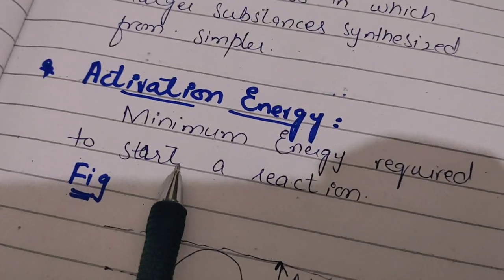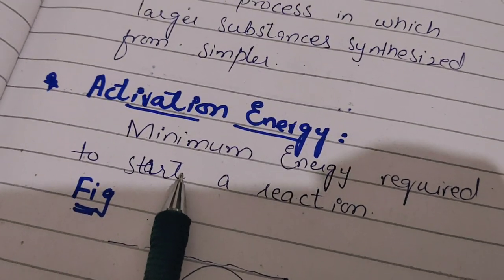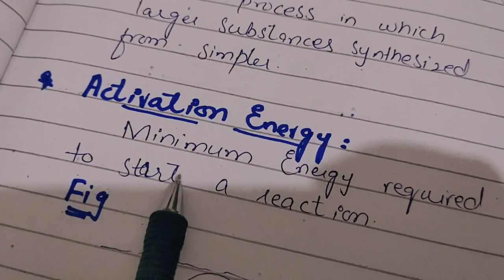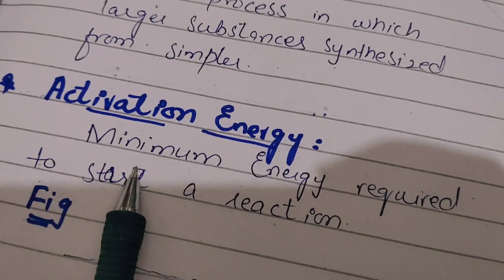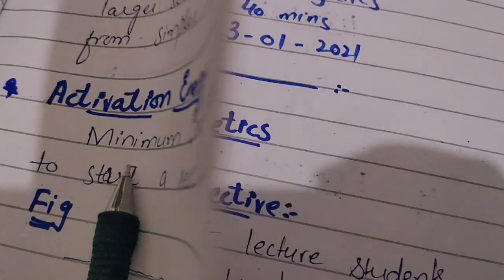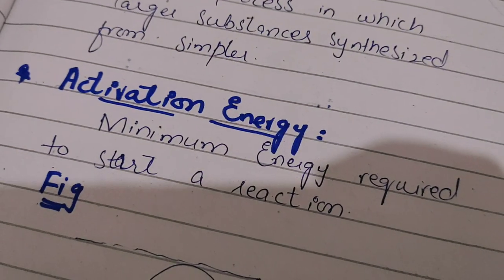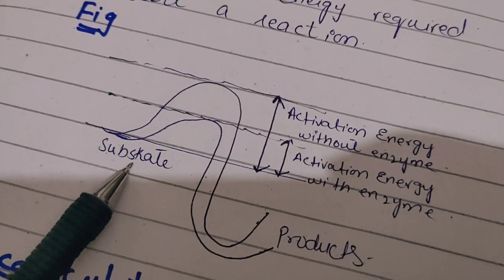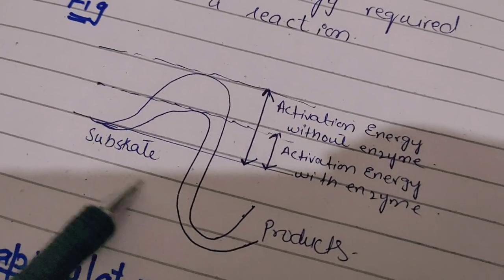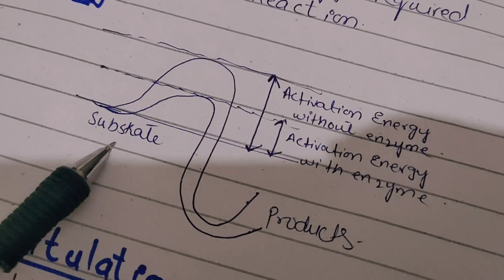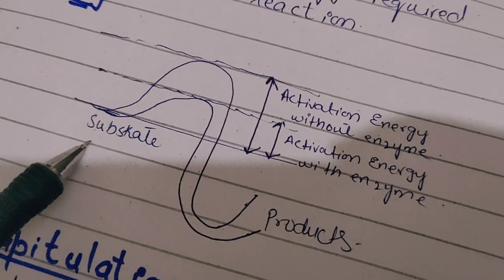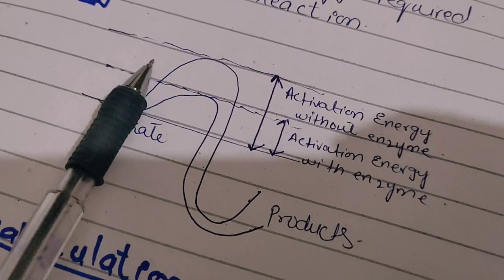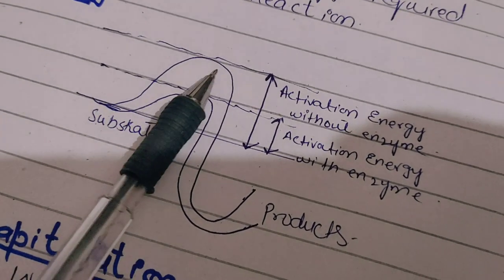Activation energy is the minimum energy required to start a reaction. When a reaction is initiated, it can be enhanced by this minimum energy, which can be provided by the enzyme. Here is a diagram: the substrate — which may be glucose, DNA, RNA, or proteins — is the initial point.